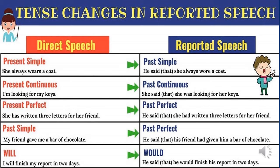Now there are some rules of tenses. If the direct speech is in simple present it will be converted to simple past — for example, 'she always wears a coat' becomes 'he said that she always wore a coat.' Present continuous will be changed into past continuous: 'I am looking for my keys' becomes 'she said that she was looking for her keys.' Present perfect will be changed into past perfect: 'she has written three letters for her friend' becomes 'he said that she had written three letters for her friend.' Simple past will be changed into past perfect: 'my friend gave me a bar of chocolate' becomes 'he said that his friend had given him a bar of chocolate.' Will will be changed into would: 'I will finish my report in two days' becomes 'he said that he would finish his report in two days.' Other than that, can will be changed into could, and may will be changed into might.